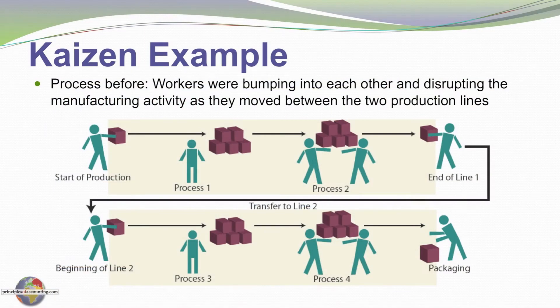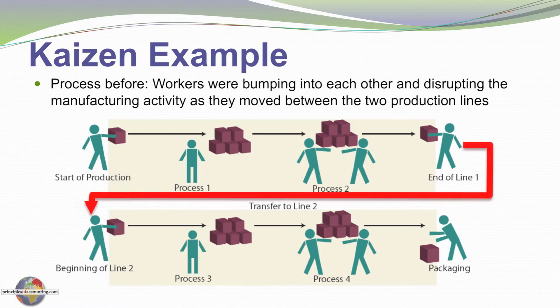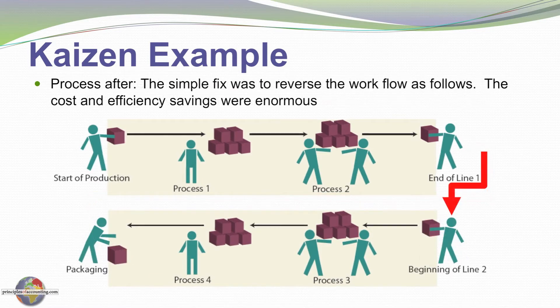Here's an example. In a manufacturing process, at the start of production employees were working on various goods, processing them down line one, then coming back around to line two, and processing into the final packaging unit. Employees said they were running into each other and travelling a long way with their goods. What if we reverse the order flow of the second manufacturing line — drop down and enter goods into the second, third, and fourth process and flow it to packaging? This reduces the time and inefficiency of moving goods back and forth. People who are hands-on daily can look around and find ways to improve efficiency and generate cost savings and greater profitability.